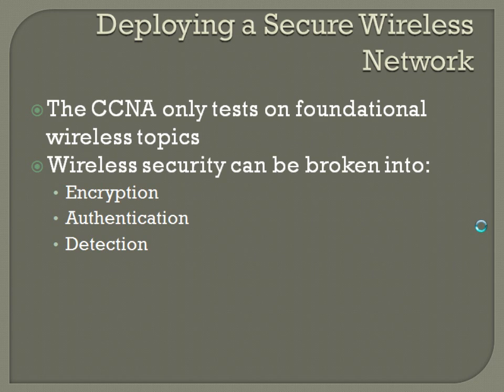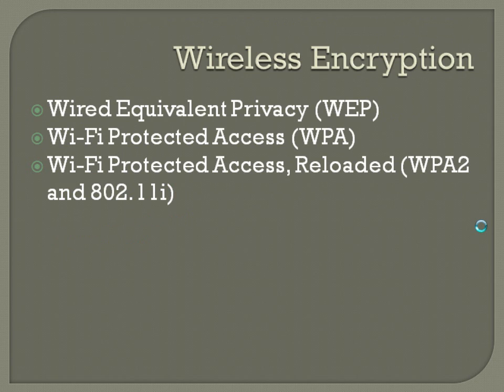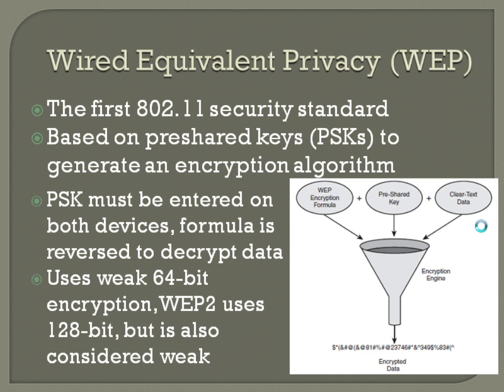Deploying a secure wireless network — CCNA only tests on foundational wireless topics, but wireless security can be broken into encryption, authentication, and detection. Starting with encryption, there are three major standards: Wired Equivalent Privacy (WEP), Wi-Fi Protected Access (WPA), and Wi-Fi Protected Access 2, also known as 802.11i or WPA2. WEP was the first 802.11 security standard.